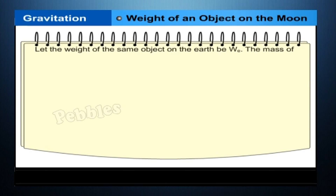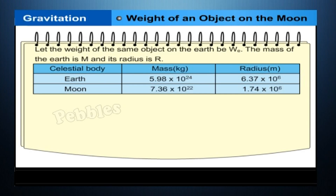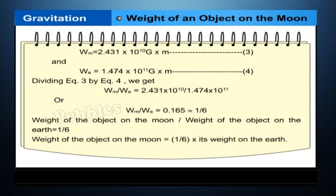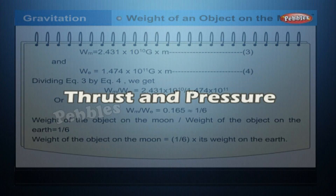Let the weight of the same object on the earth be W_e, the mass of the earth is M and its radius is R (equation two). Substituting the values from the table in equations one and two, we get equations three and four. Dividing equation three by equation four, we get: weight of the object on the moon divided by weight of the object on the earth equals one-sixth. Therefore, weight of the object on the moon equals one-sixth of its weight on the earth.